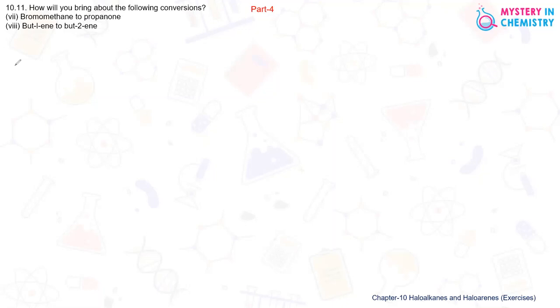In part 4 of question 10.11 we are trying to solve the 7th and 8th conversions, so first is the 7th one. Here bromomethane should be converted to propanone. Bromomethane has one carbon atom and we are ascending the series to more carbon atoms in propanone.